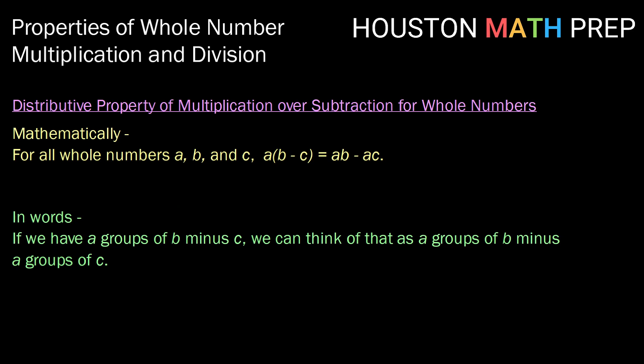The distributive property for multiplication over subtraction says for all whole numbers a, b, and c, a times the quantity b minus c is the same as ab minus ac. This is really the same thing as the distributive property over addition, but we go ahead and state it as well.